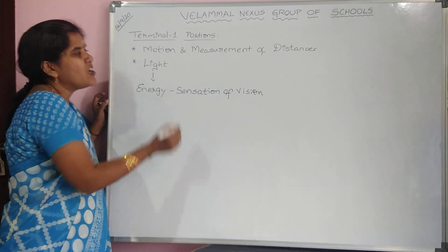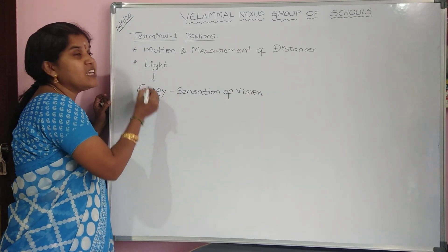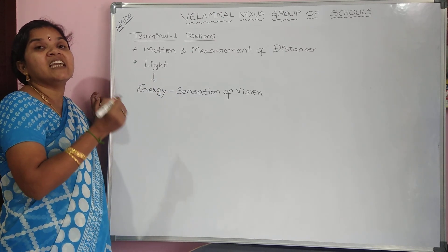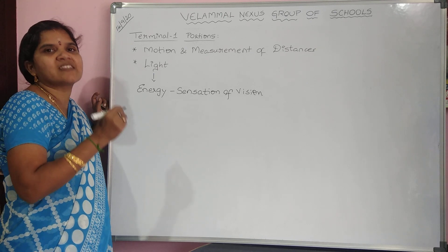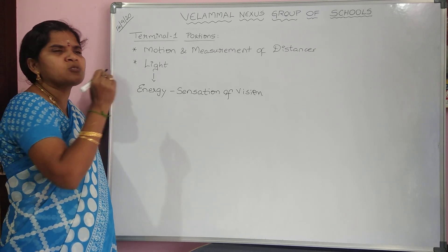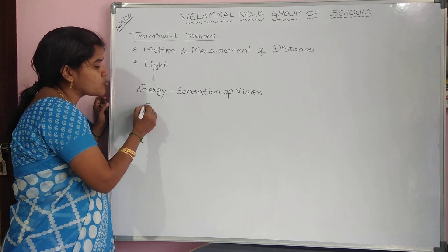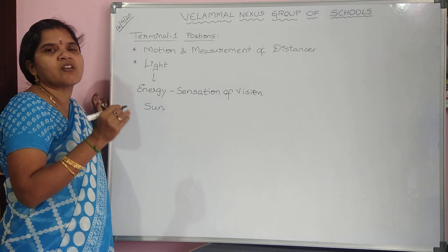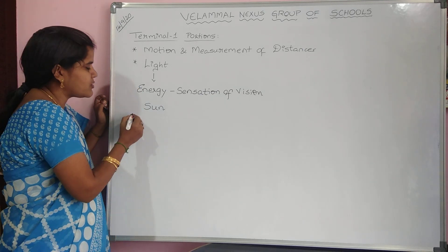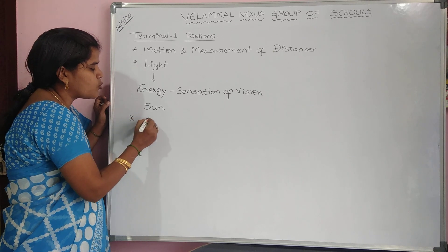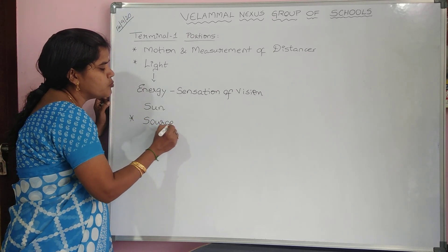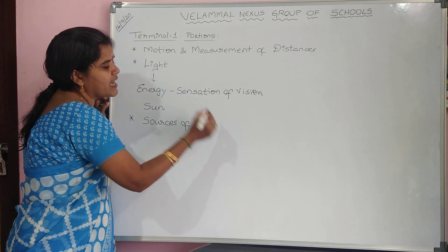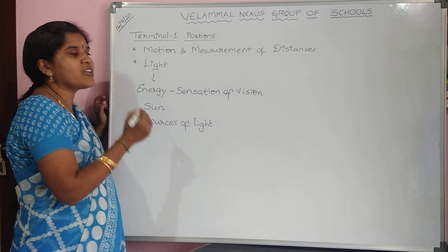Light is an invisible energy which makes things visible. The main source of light, which we all know, is the sun. The sun is the main source of light. There are certain sources that emit light on their own, and from this we can say that sources of light can be classified into two categories.